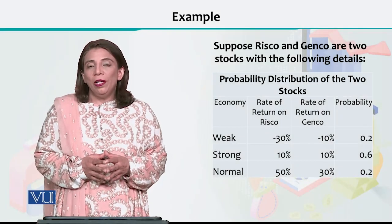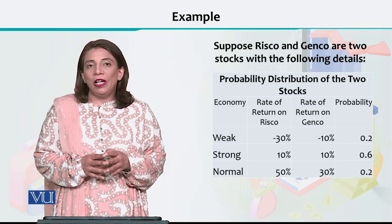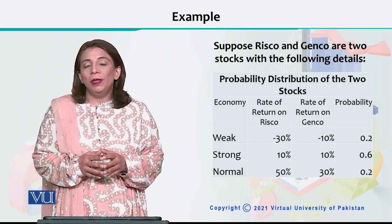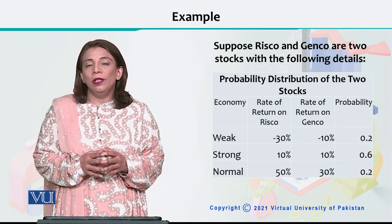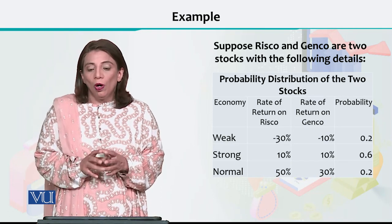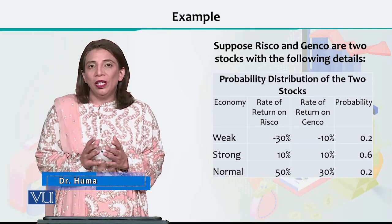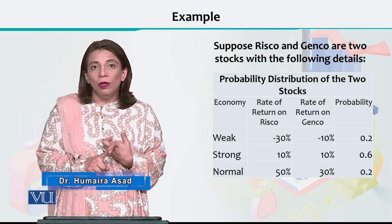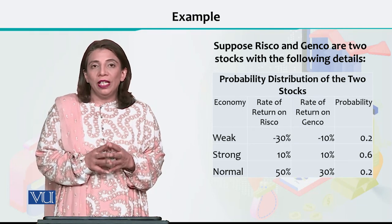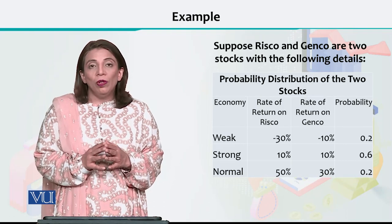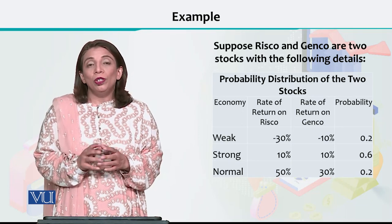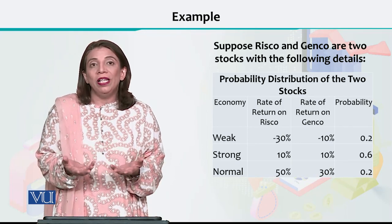In this section I will tell you how to calculate the values of standard deviation of the expected rate of return. For that purpose I will be using an example in which we will learn how to calculate the standard deviation of the expected rate of return for two different stocks. We have the data for two stocks called RISCO and GENCO — hypothetical names — and three possible situations of the economy: strong, normal, and weak. We have given the expected returns and the probability of those returns.